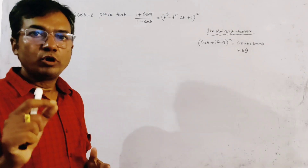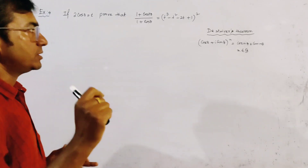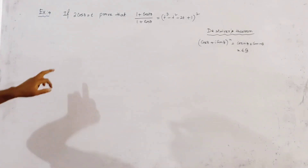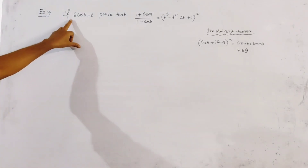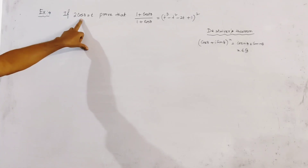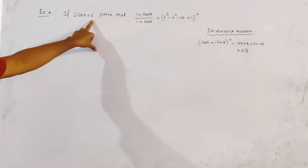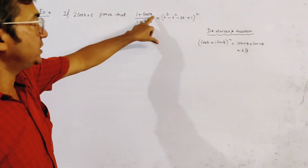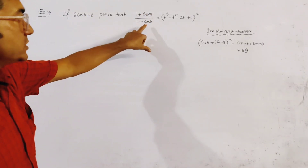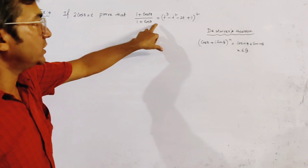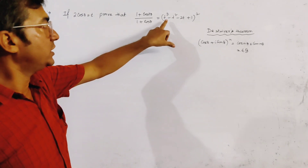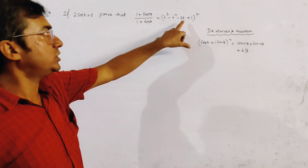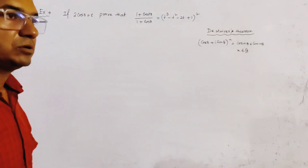This problem is from complex numbers. The problem states: if 2cosθ = t, we have to prove that (1 + cos7θ)/(1 + cosθ) = (t³ - t² - 2t + 1)².